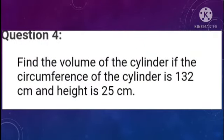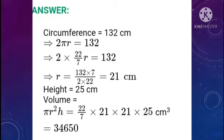Question 4: Find the volume of a cylinder if the circumference of the cylinder is 132 cm and height is 25 cm. Circumference = 2πR = 132 cm. Therefore, 2 × (22/7) × R = 132, so R = 132 × 7 / (2 × 22) = 21 cm.